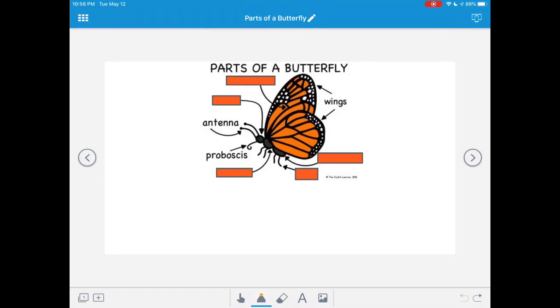Do you remember what the beautiful lines are called that form those great patterns on the butterfly? It helps to pump blood through the wings. They're called wing veins. Can you say wing veins? Nice work.